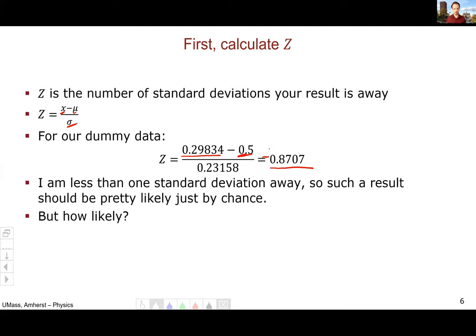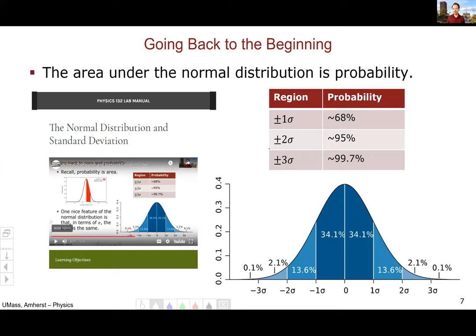Such a result like this should be pretty likely actually, just by chance. And the question is, how likely is getting this answer? We're going to go back to the very beginning, where when we talked about the normal distribution and standard deviation, we said that the area under the normal distribution is probability. If you're within one standard deviation, that is a probability of 68%. 95% of the time, you'll be within two standard deviations of the mean.